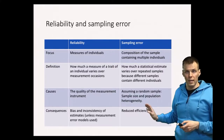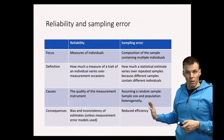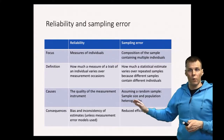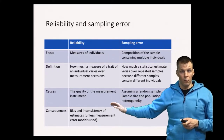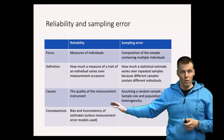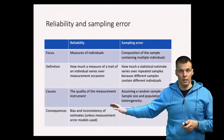So these two sources of random error have very different consequences. Sampling error is easy to reduce by increasing sample size, while to reduce unreliability you have to improve your measurement practices.